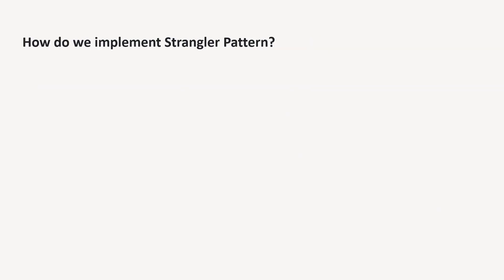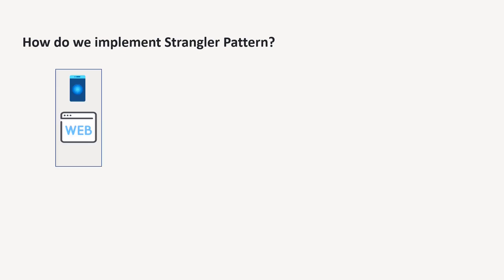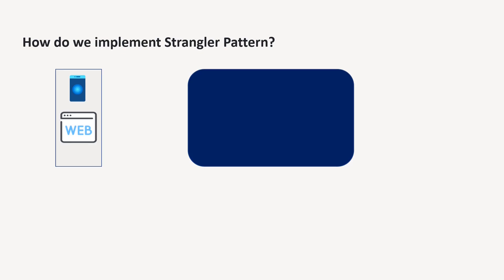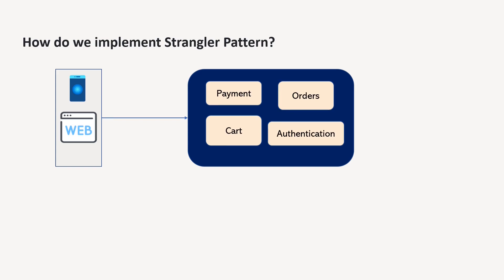Suppose you've identified that your application is modular and you can carve out functionalities and create microservices using this pattern. You have simple clients like web or mobile, then you have a big monolithic application which has a payment service, order service, and a few more services. These are interacting with a database in the backend. And now you want to apply this pattern.